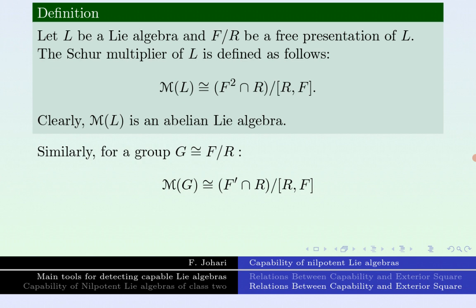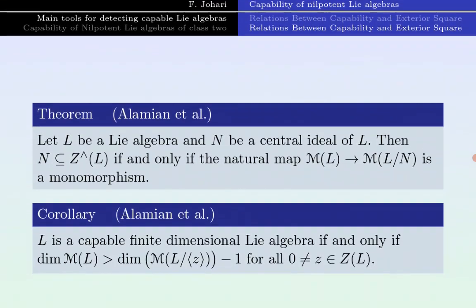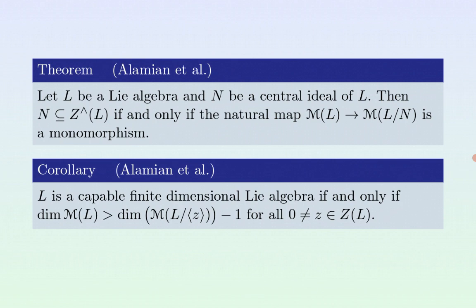Another tool for showing capability is the Schur multiplier. The Schur multiplier is related to the free presentation of the Lie-algebra. There are two important results. The first result shows how to use the Schur multiplier for detecting capability: N is a subalgebra of the exterior center of L if and only if the natural map between the Schur multiplier of L and the Schur multiplier of the factor of L by N is a monomorphism.